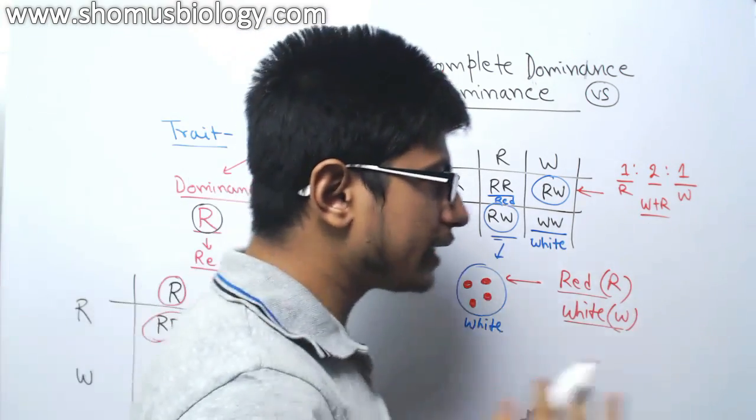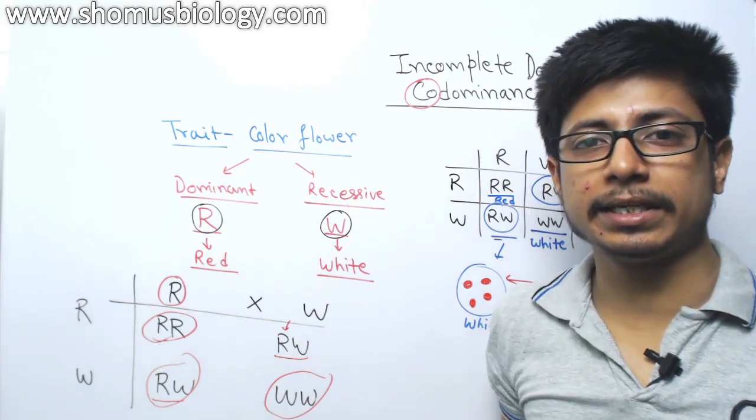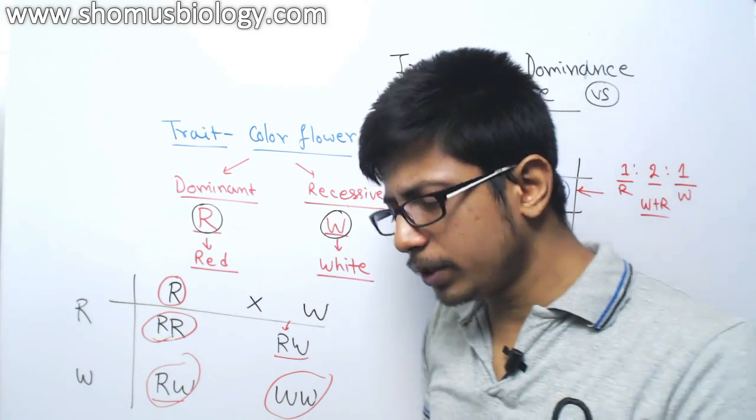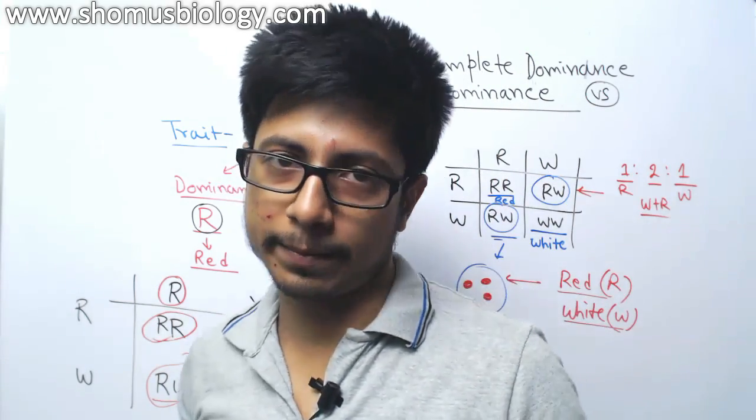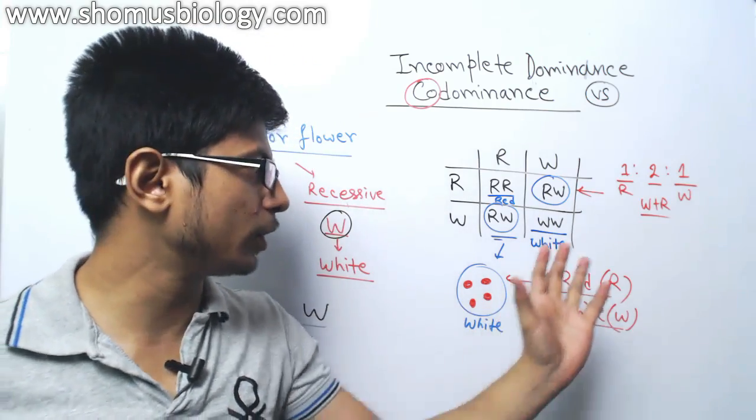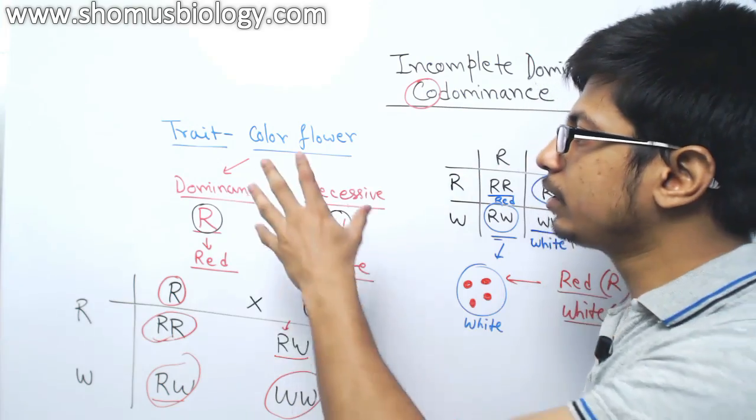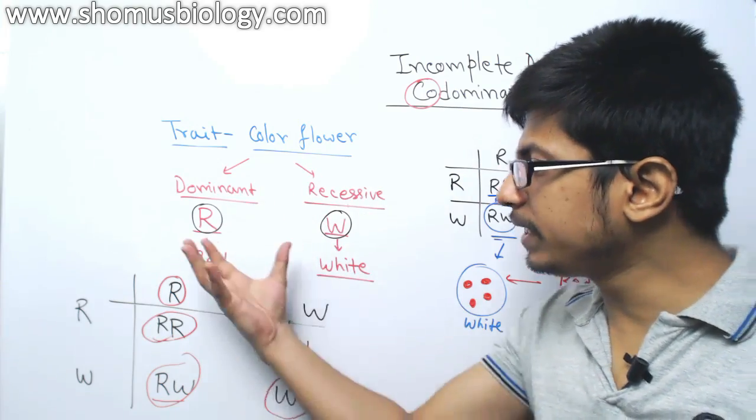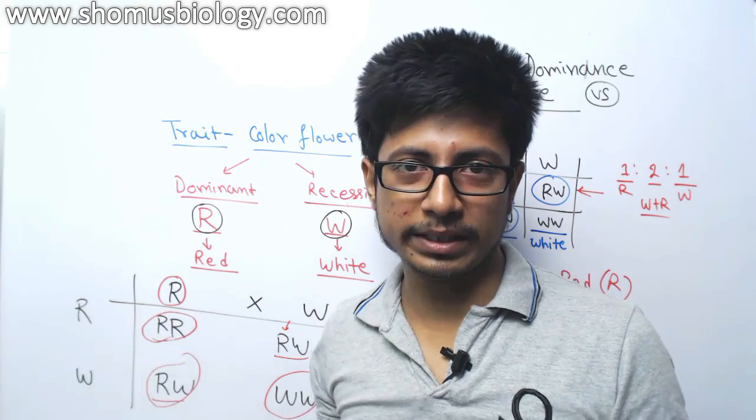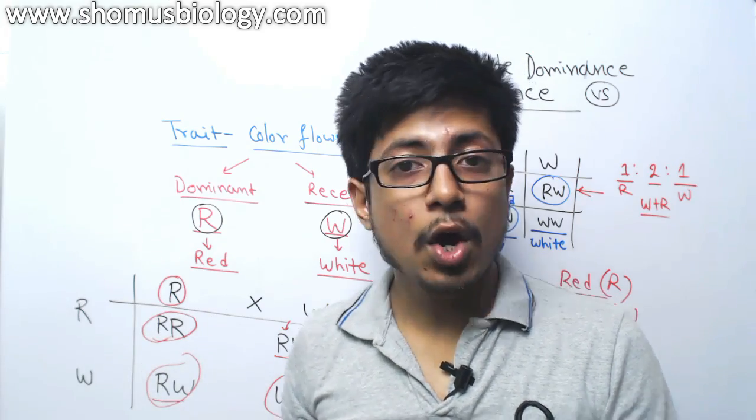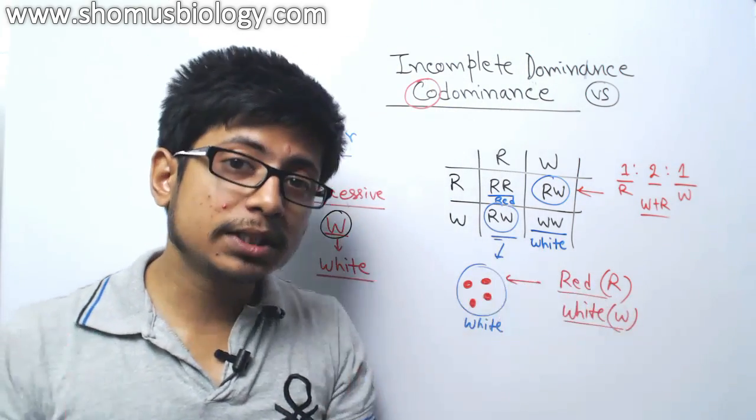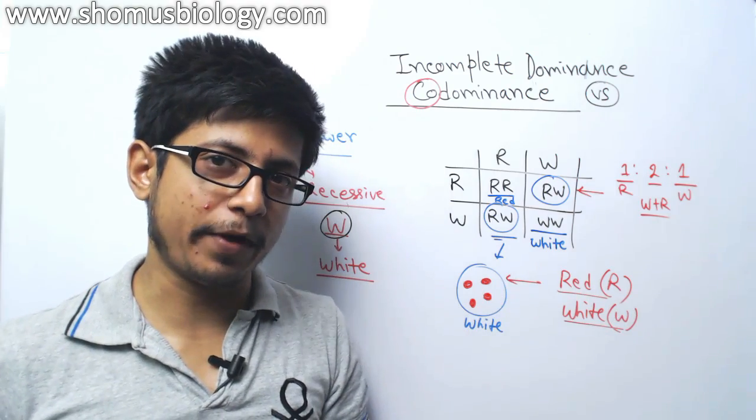So the difference now between the codominance and the incomplete dominance is in both the case they produce a different phenotype. That is true. The comparison if we talk about in both this case, they produce a third phenotype, but in incomplete dominance the dominant allele is not fully expressed. There is a problem with the expressivity of the dominant allele while in codominance, both the alleles are expressed as a dominant factor.